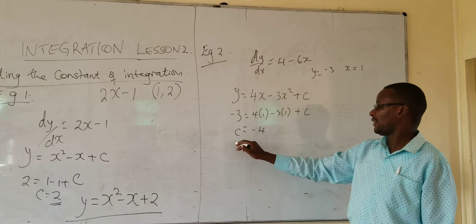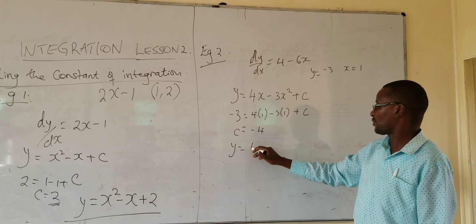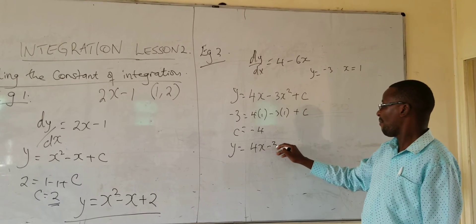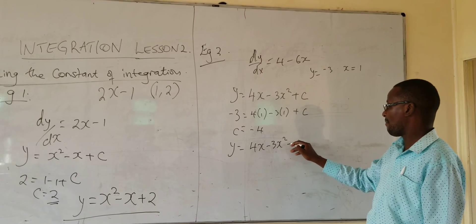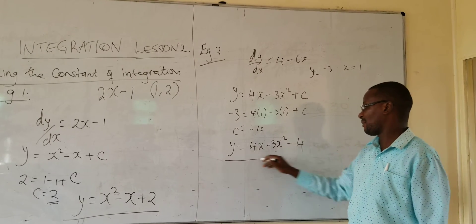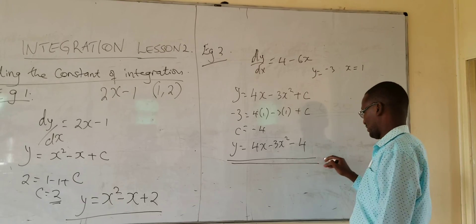Then you rewrite the equation. y is equal to 4x minus 3x squared minus 4. That becomes the equation.